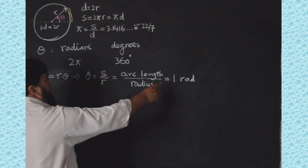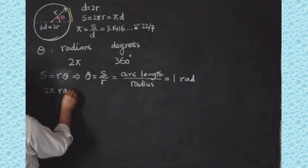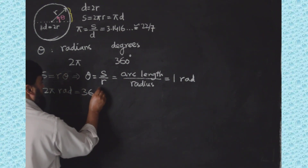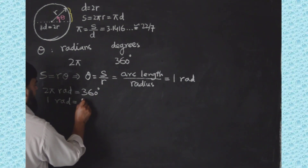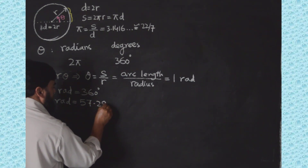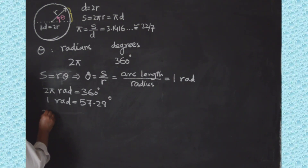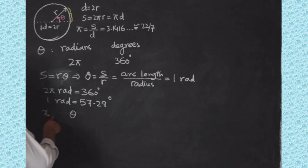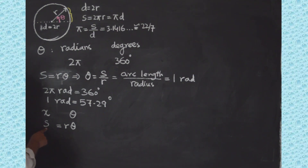Now, how many degrees is one radian equal to? From 2π radians equals 360 degrees, if I divide 360 by 2π, I get 57.29 degrees. Now I define: the linear displacement is x, while the angular displacement is theta. One radian is equal to 57.29 degrees.